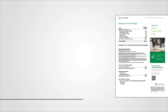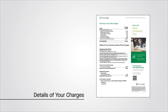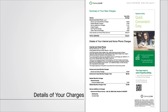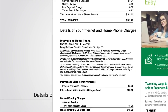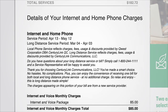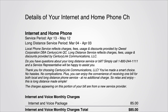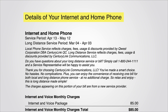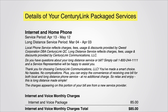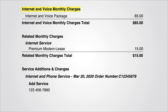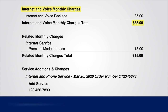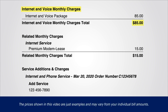The next section of your bill, which all customers have, is the Details section. This section breaks your charges on the Account Summary down into more detail. Depending on what CenturyLink services you have, this may be titled Details of your Internet Charges, Details of your Internet and Home Phone Charges, or Details of your CenturyLink Packaged Services. In this section, you'll see your monthly charges, which is probably the amount that looks most familiar to you – the monthly cost of your services. If you lease or rent a modem with us, you may find those monthly charges here too.